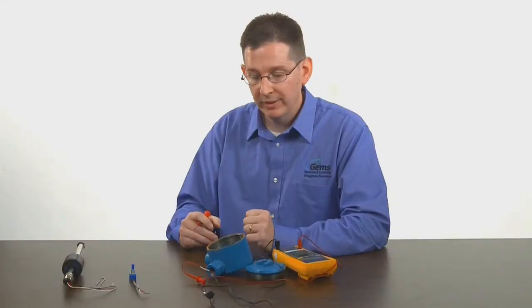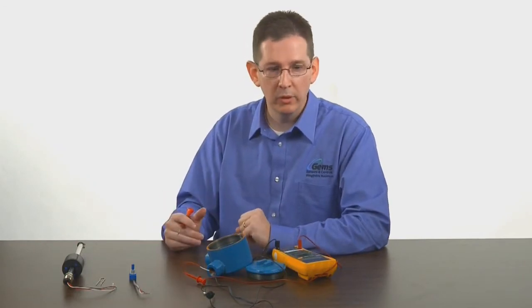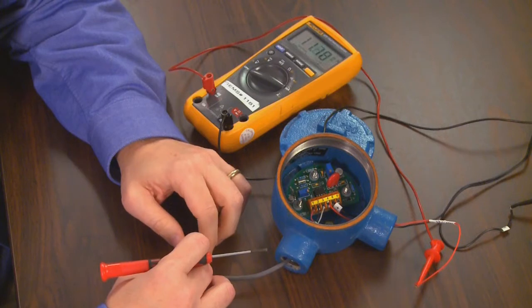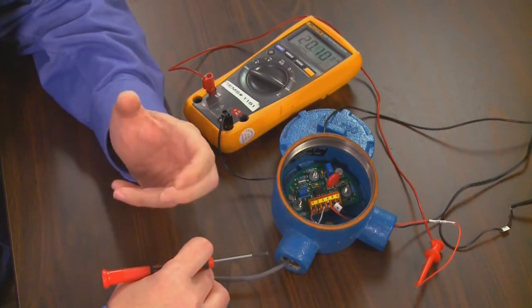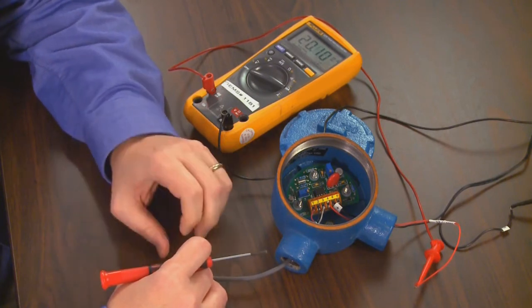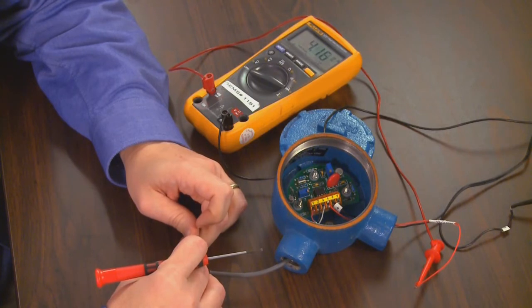Once you have your potentiometer connected, we want to establish the direction of raising and lowering its output. Turning the potentiometer clockwise, you'll notice on the multimeter that the output goes towards 20 milliamps. Counterclockwise, the output drops towards 4 milliamps.